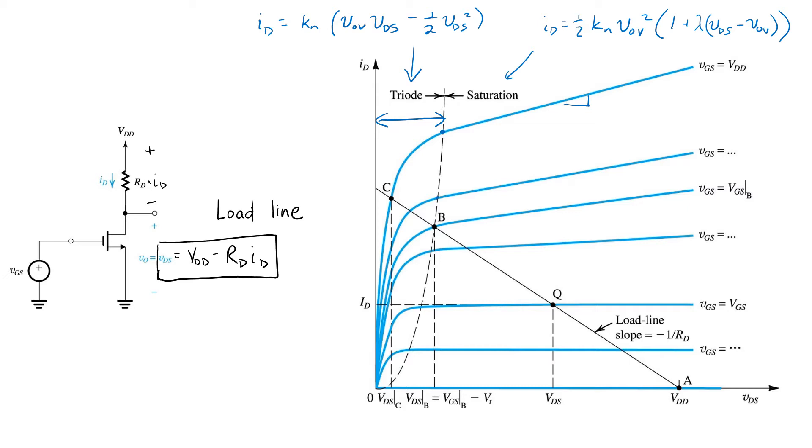Whereas as far as the load line is concerned, the operating point has to lie on the black line. So, the actual value of ID and VDS will correspond to the intersection of those two plots.